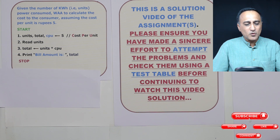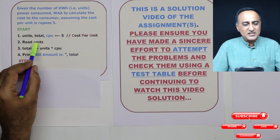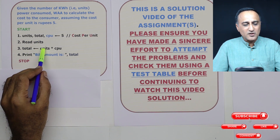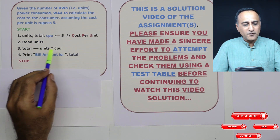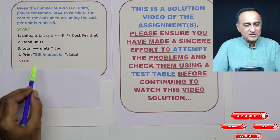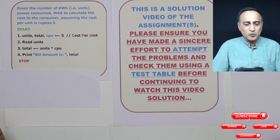You can test this out with different values. Let us say the units is 50. So total is equal to 50 into five, which equals 250 rupees, and the bill amount is 250 rupees.